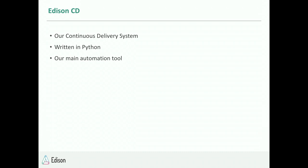Next is Edison CD — our continuous delivery system. This is mainly a tool written in Python. In Drupal 7 we used a lot of bash scripts with Jenkins for deployment and automation, but we've since moved to Python. We're currently using a CI tool called iron.io. So that's our continuous delivery and main automation tool.